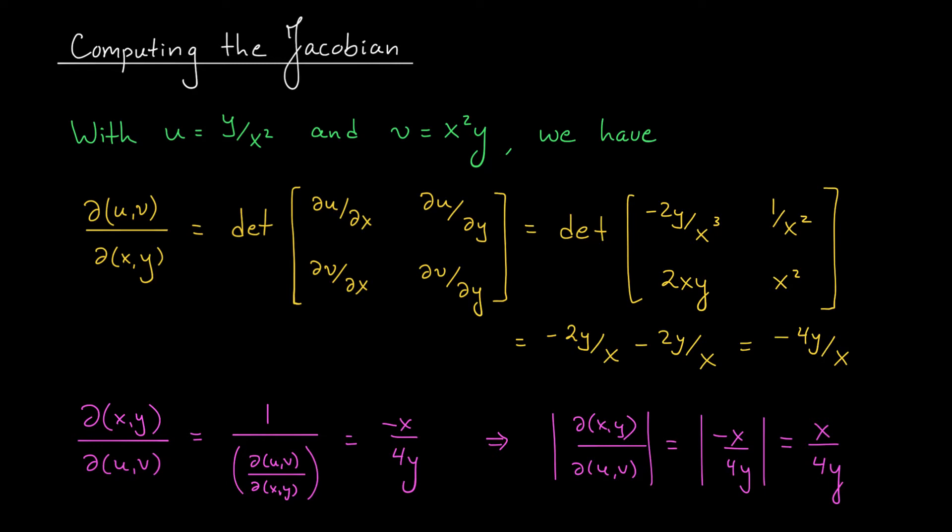This isn't something that's new to us. When we converted to polar coordinates, we found that our Jacobian was rho. It wasn't a constant there either. So it's not a problem to have a non-constant Jacobian, but we do need to be careful.